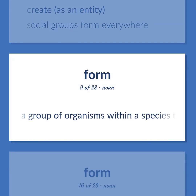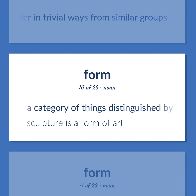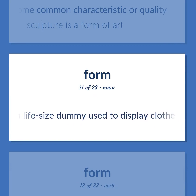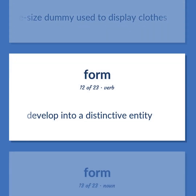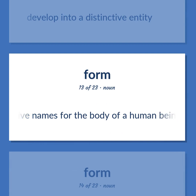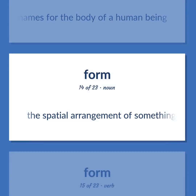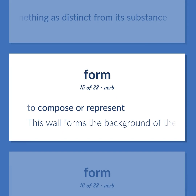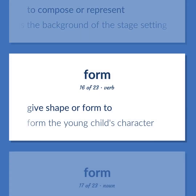Form: Biology — a group of organisms within a species that differ in trivial ways from similar groups. A category of things distinguished by some common characteristic or quality — sculpture is a form of art. A life-size dummy used to display clothes. Develop into a distinctive entity. Alternative names for the body of a human being. The spatial arrangement of something as distinct from its substance. To compose or represent — this wall forms the background of the stage setting. Give shape or form to — form the young child's character.